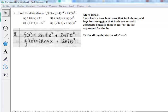So the math idea here is that we have two functions, it's a sum of two functions, that include natural logs, but both of those are actually constants. There's no x in there.